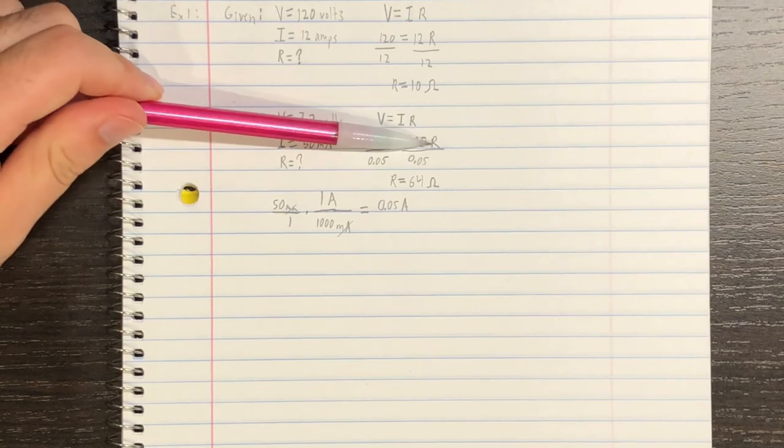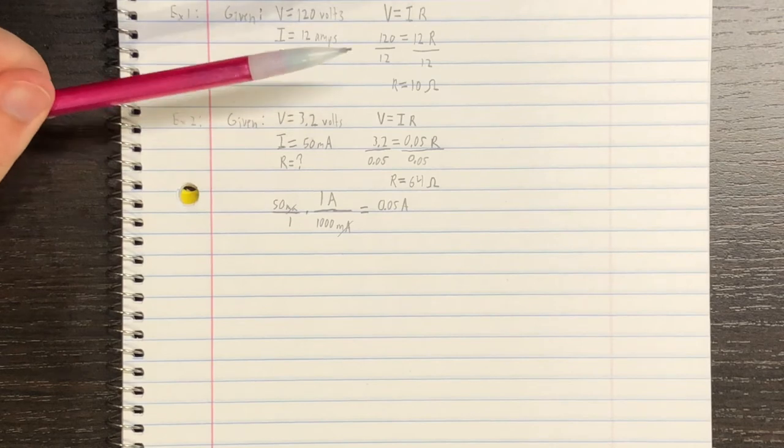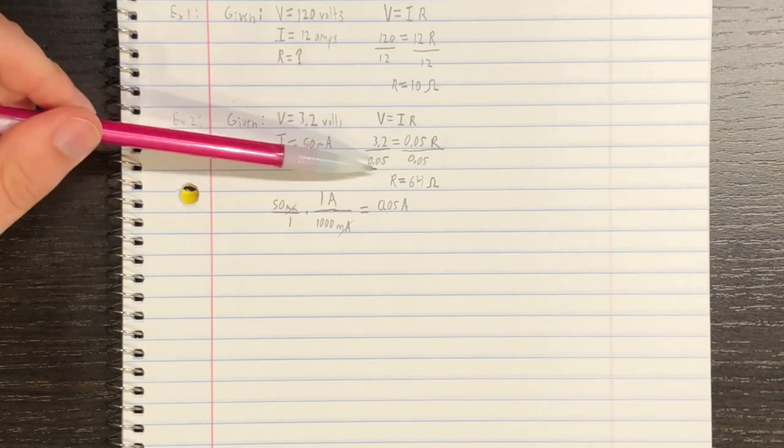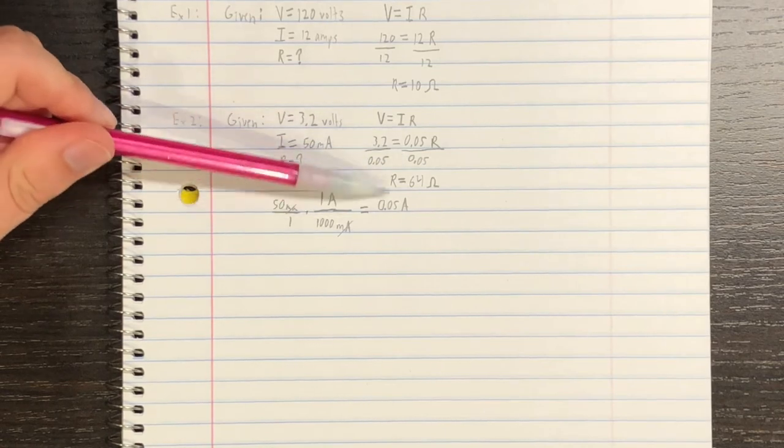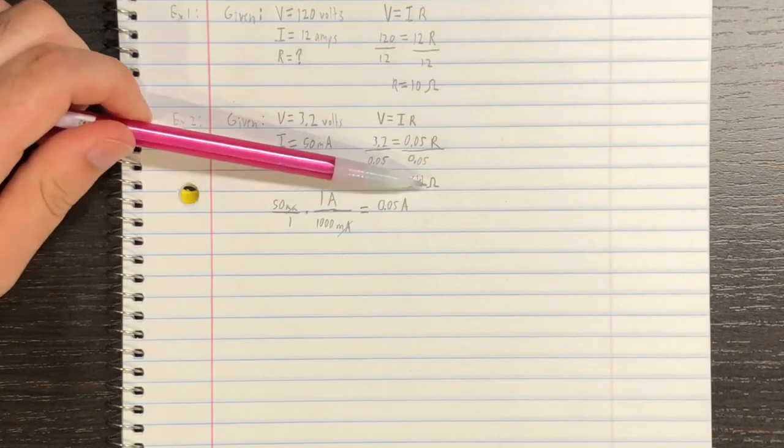And for resistance, that's what we're solving for. We don't know it yet. So, we're just going to write R in here. Now, we just divide both sides by 0.05 amps, indicated here and here. And then, we find that the resistance is equal to 64 Ohms.